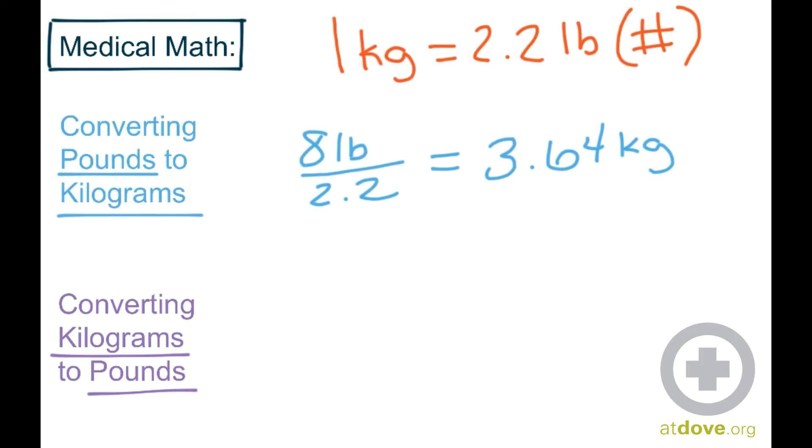And there are going to be situations where you have to convert kilograms back into pounds. So a good example of this is if a client asks how much their dog weighs, and you tell them that their dog weighs 23 kilograms, they may look at you and say, I don't really know how much that is. So in order to convert that kilogram weight back into pounds, we're going to just do the reverse math, which is multiply by 2.2, and that gives us 50.6 pounds.